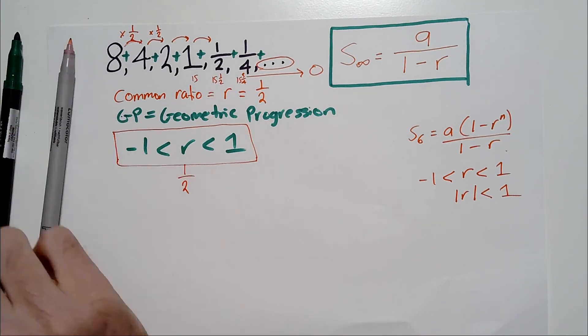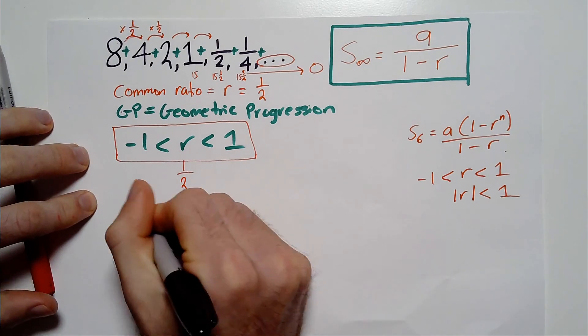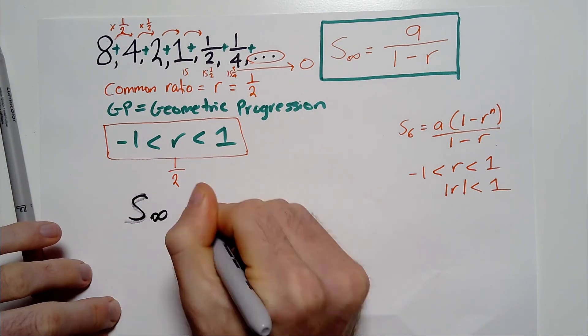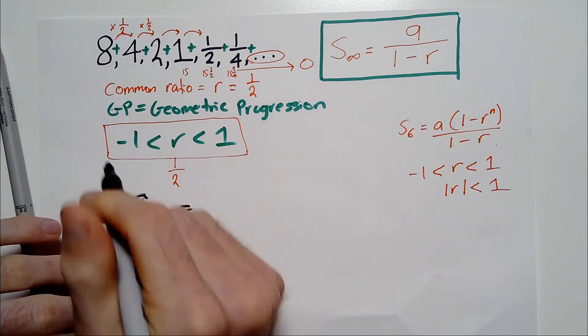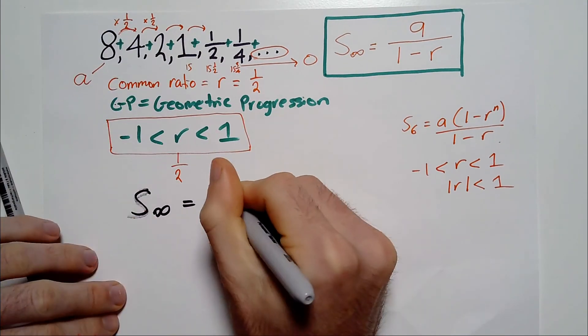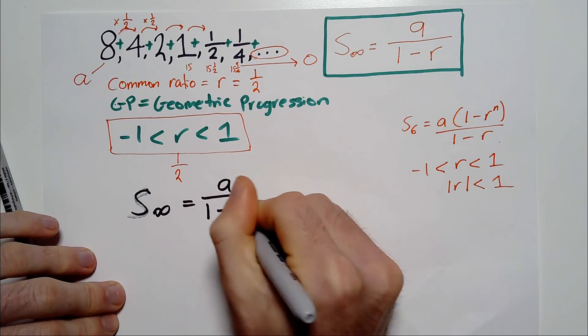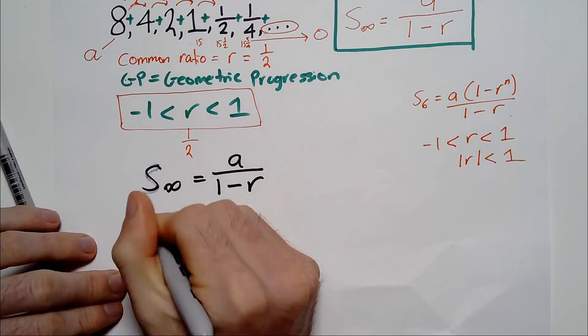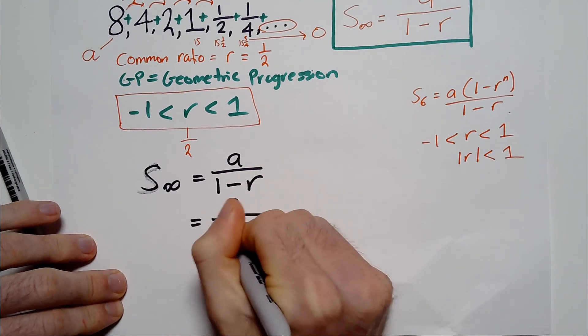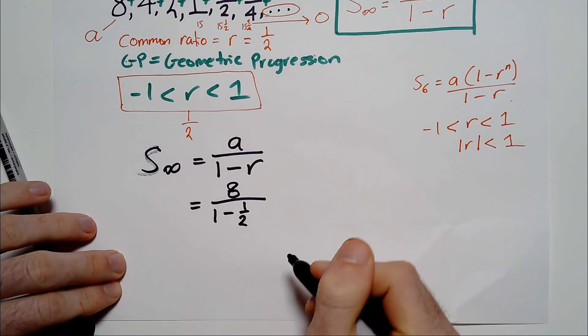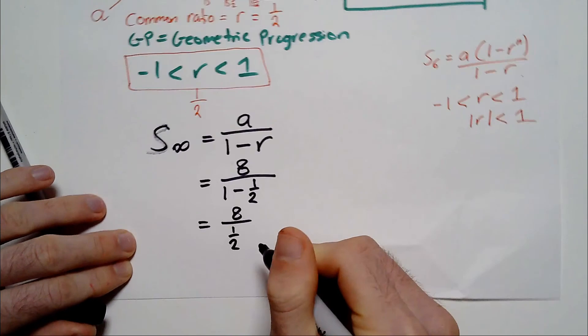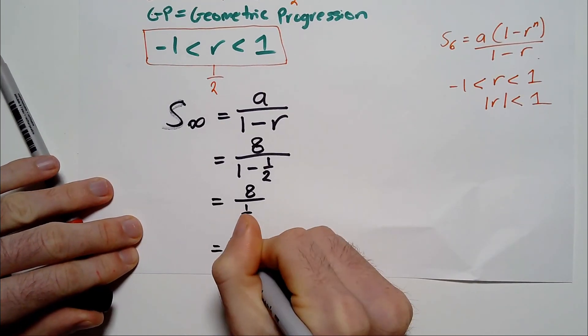So that should reflect in our formula here. Here's the formula. If you want to find an infinite sum, then what you do is you get the first term, a. And by the way, a in this case is 8 because it's the first term. So a over 1 minus r. It's a very simple formula. And then if we apply it here, we are going to get 8 over 1 minus a half, which equals 8 over a half, which equals 16.